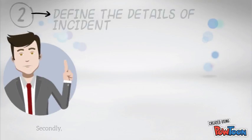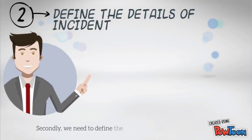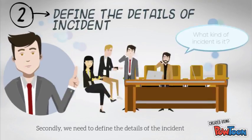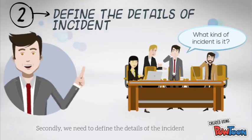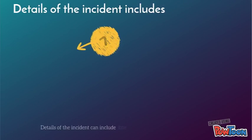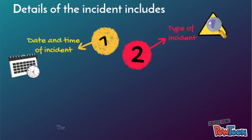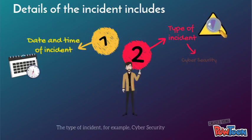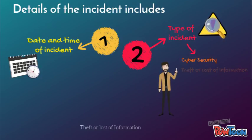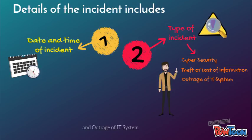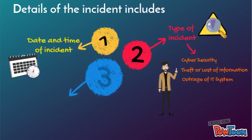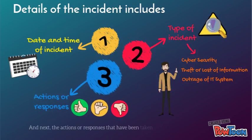Secondly, we need to define the details of the incident. Details of an incident can include the date and time of the incident, the type of incident — for example, cybersecurity, theft or loss of information, and outage of IT systems — and next, the actions or responses that have been taken by the institution.